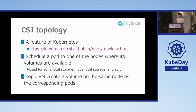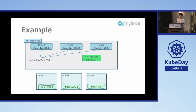Regarding CSI topology: CSI topology is a Kubernetes feature that schedules pods to nodes where their volumes are available — whether by zone, node, or other topology. This feature is used for zone-local or node-local storage. In TopoLVM, it ensures the volume is provisioned on the same node as the corresponding pod.